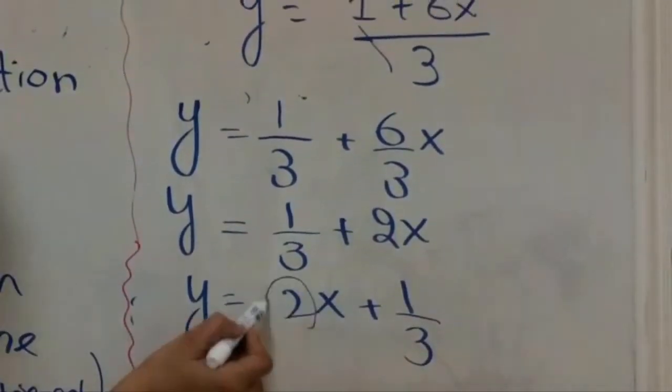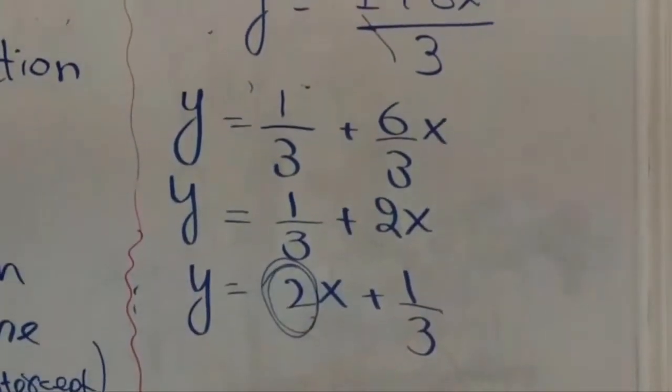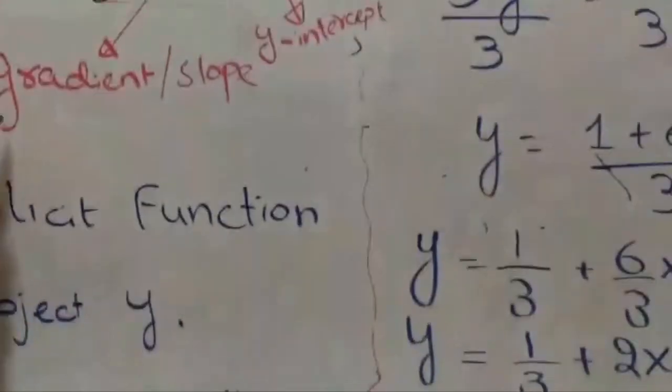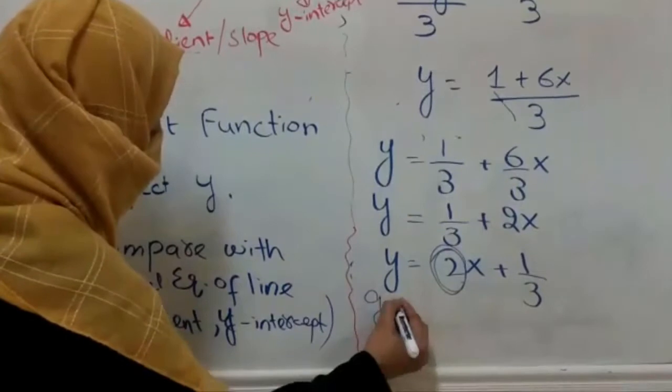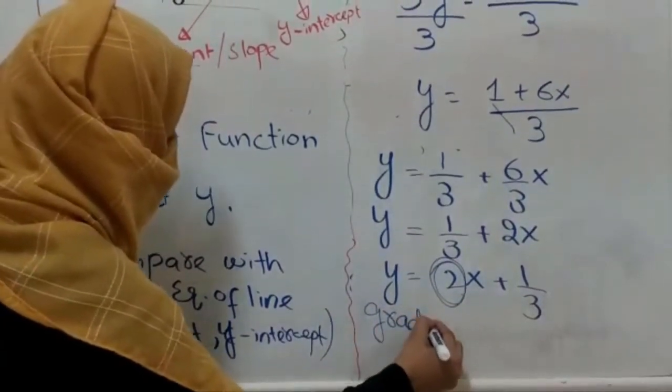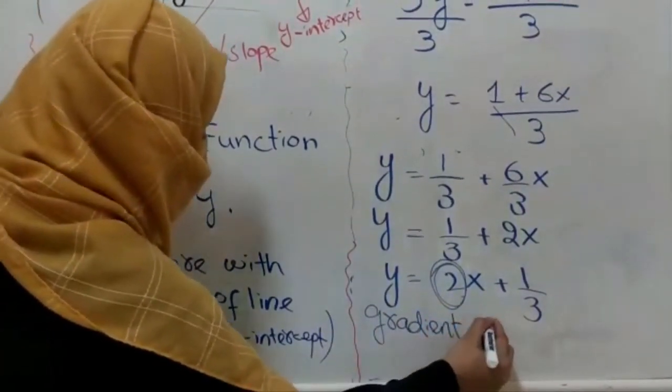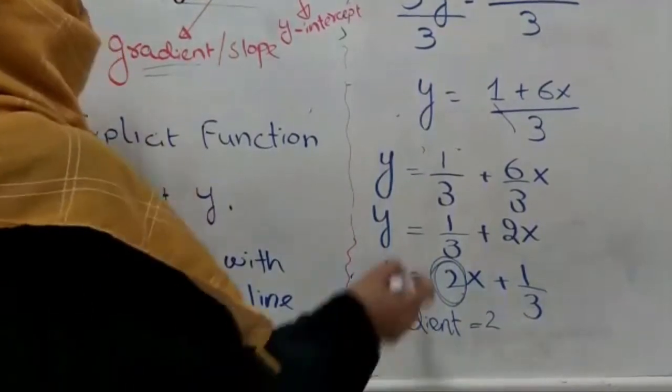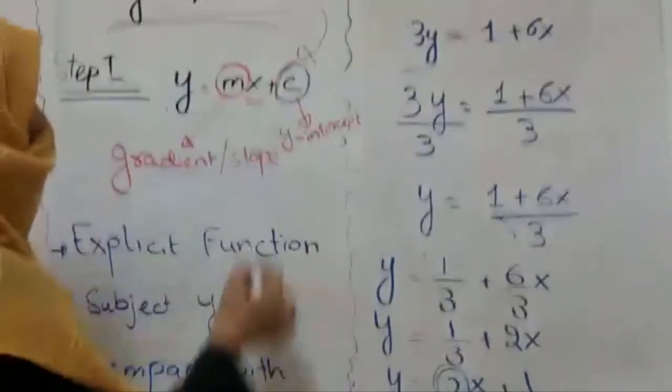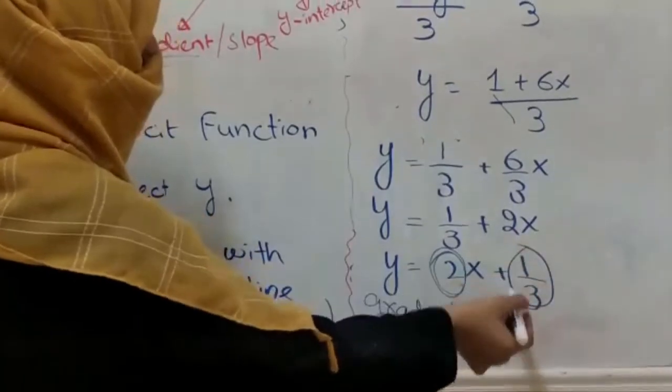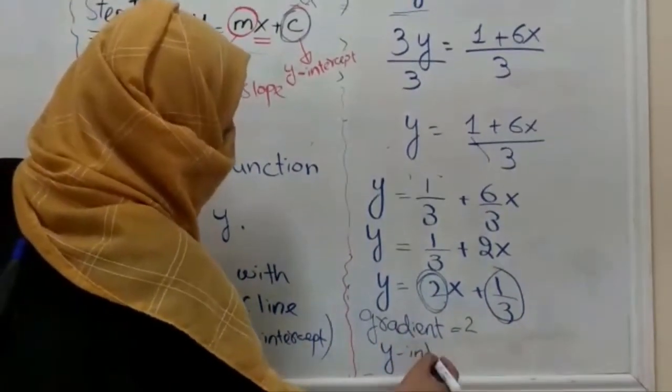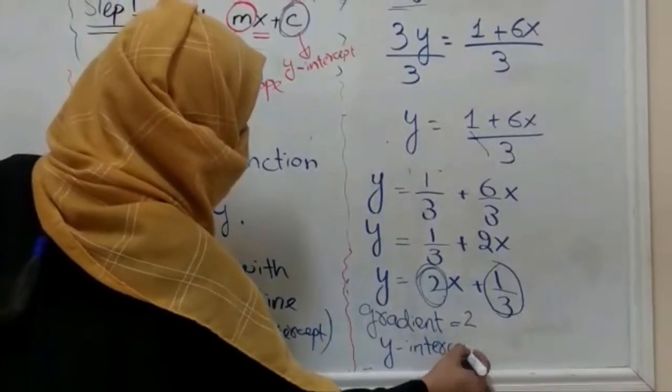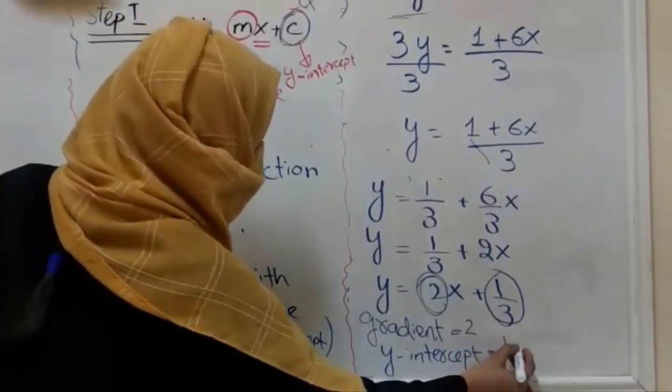If I'm going to rewrite this expression, now coefficient of x is what? Coefficient of x is the gradient, right? So 2 is the gradient over here. So without variable we have intercept - without variable we have intercept 1 by 3. So y-intercept is 1 by 3.